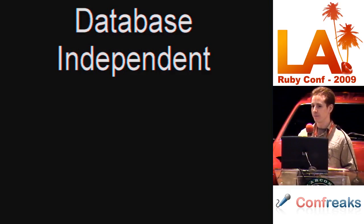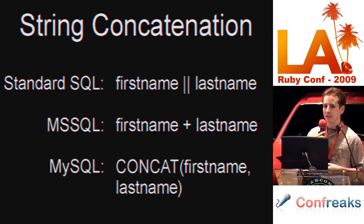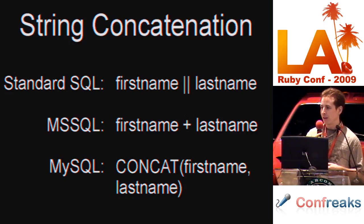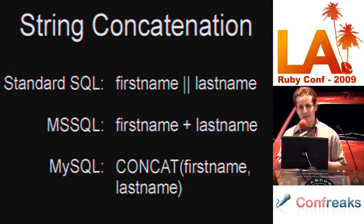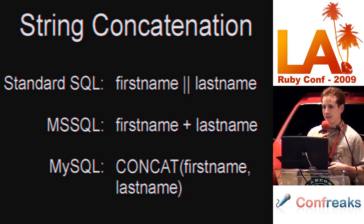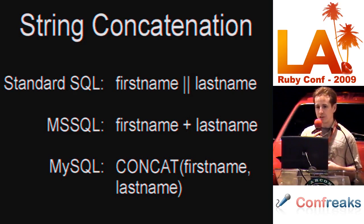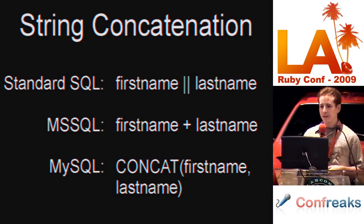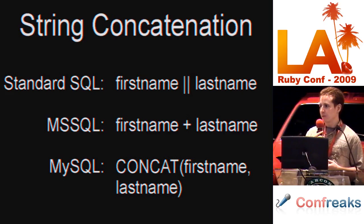If you've ever had to work on an application that supports multiple databases, you know it's more often than you first think. For example, take even a simple thing like concatenating strings. The SQL standard string concatenation operator is the double pipe, but Microsoft SQL Server uses the addition operator, and MySQL uses the concat function. The general approach to database independence using another library is to basically avoid SQL concatenation in the database altogether, select all the columns needed, and then do the concatenation in Ruby. But this is slower and not always possible, since a filter may depend on the result of a string concatenation. Sequel abstracts these SQL syntax issues and allows you to write efficient, database-independent code.